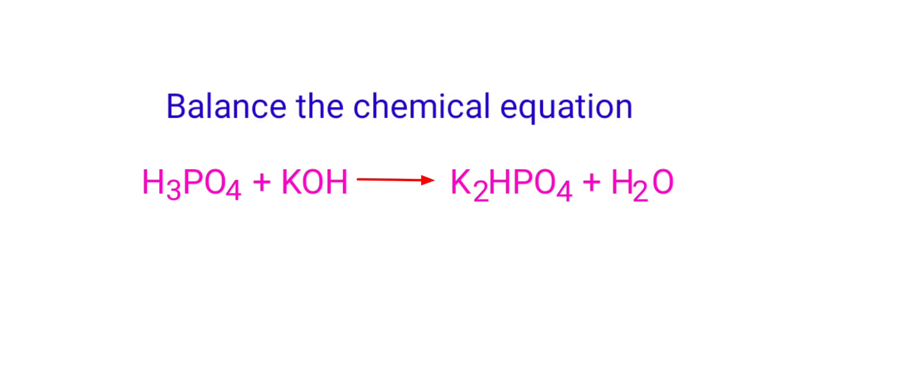Balance the chemical equation. Phosphoric acid plus potassium hydroxide gives us dipotassium hydrogen phosphate plus water.